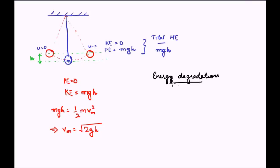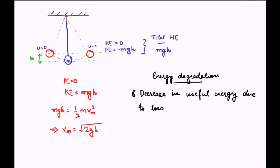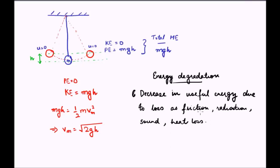Energy degradation is the decrease in useful energy due to losses such as friction, radiation, sound losses, heat losses, or other forms of energy loss. The intended usage of the energy is not completely feasible — some of it is always lost. That phenomenon of loss is called energy degradation.